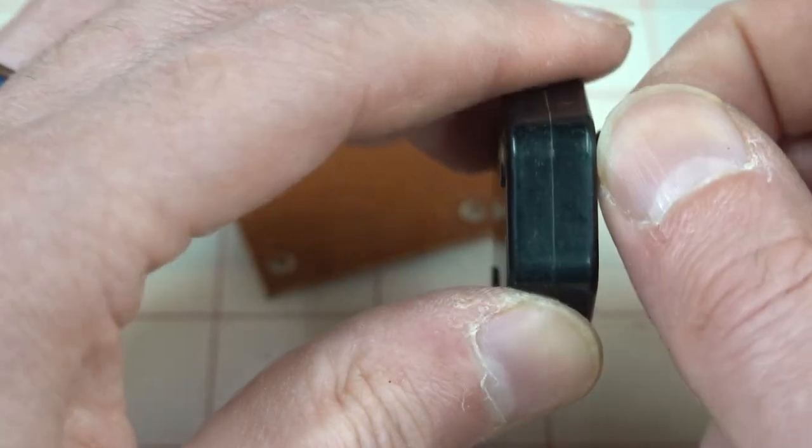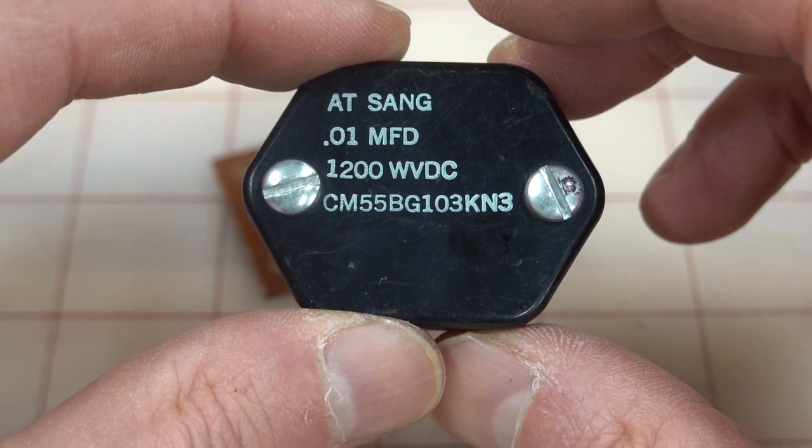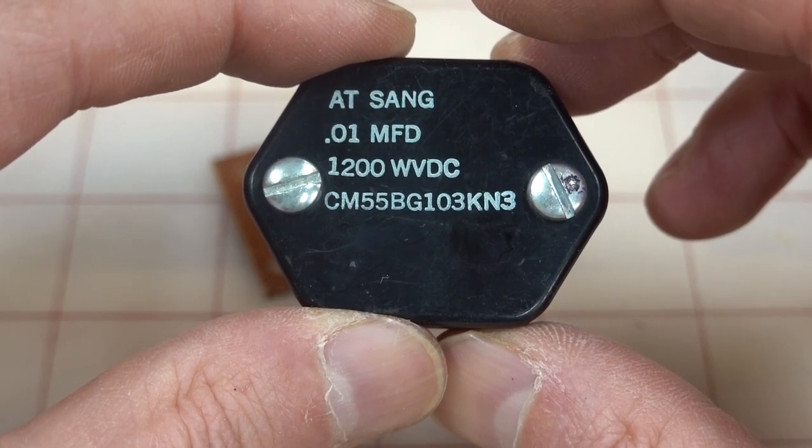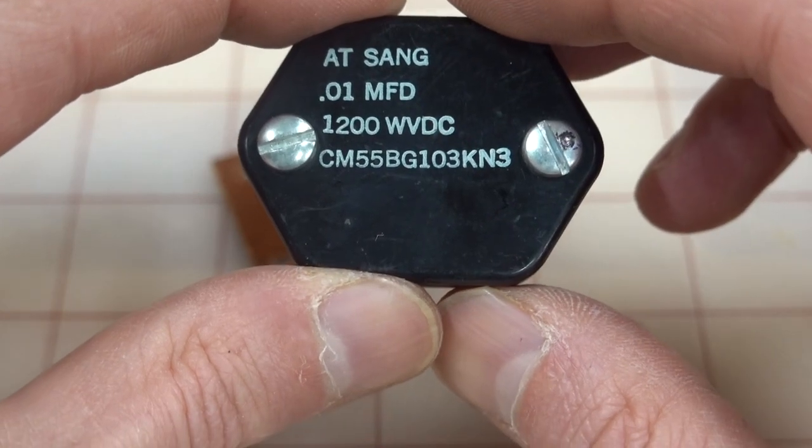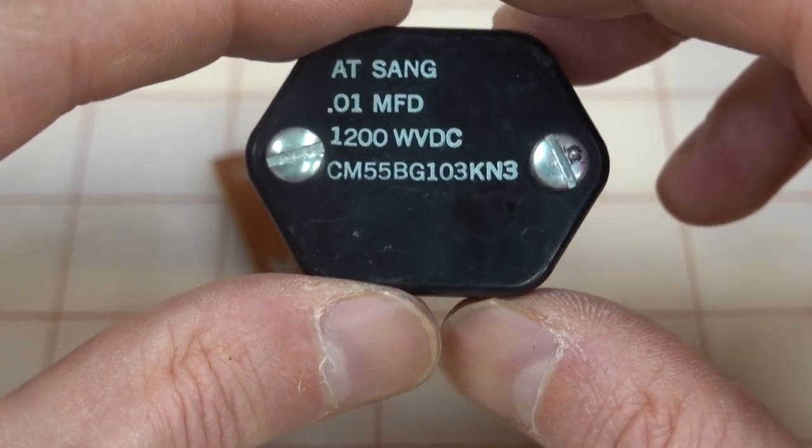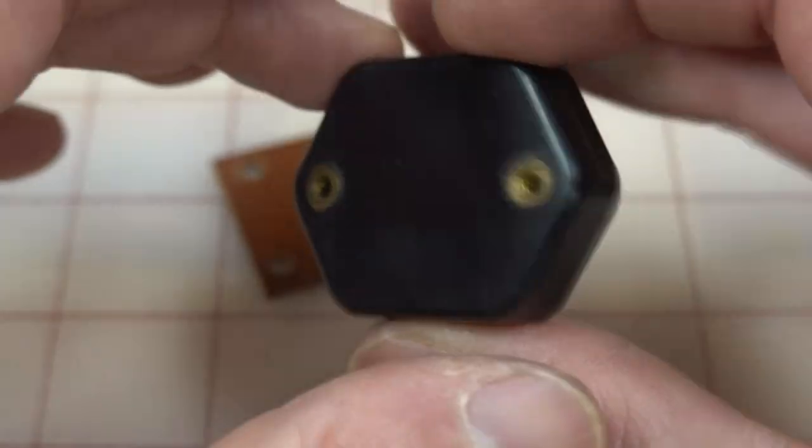So I'm going to actually save this part for the vacuum tube Tesla coil. So there you have a capacitor at 0.01 microfarads, 1200 volts DC. And it gives us a part number, but a quick Google search doesn't come up with anything for that part number. So God knows how old this is. No other markings on it at all.